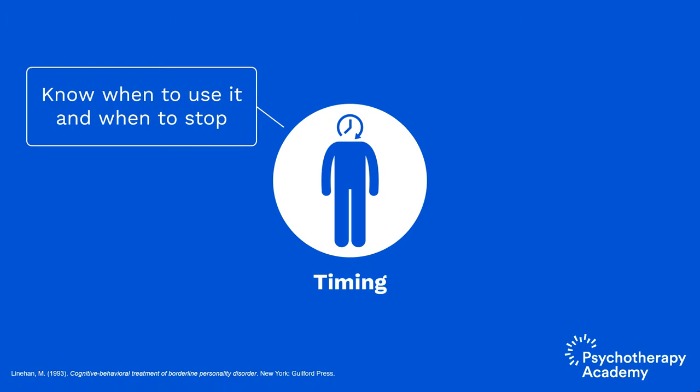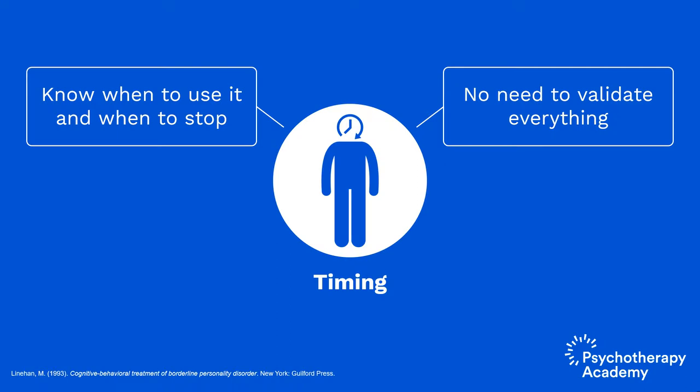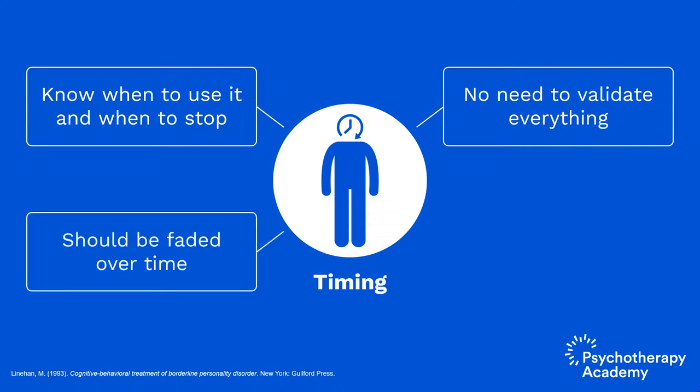It's not necessary to validate everything. While we need validation strategies to balance out change strategies, in the beginning we're going to be using a lot more validation, but over time we're going to fade that. It has to be faded over time, or else it's like keeping the training wheels on a bicycle. We've got to take that away so that the person ultimately learns how to validate themselves.